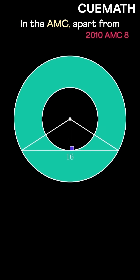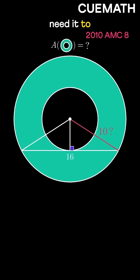In the AMC, apart from the cord's length, one of the radii was also given as 10. But do we actually need it to find the area?